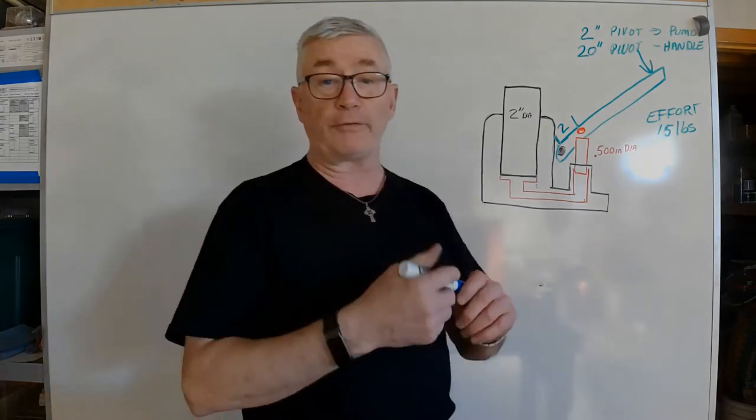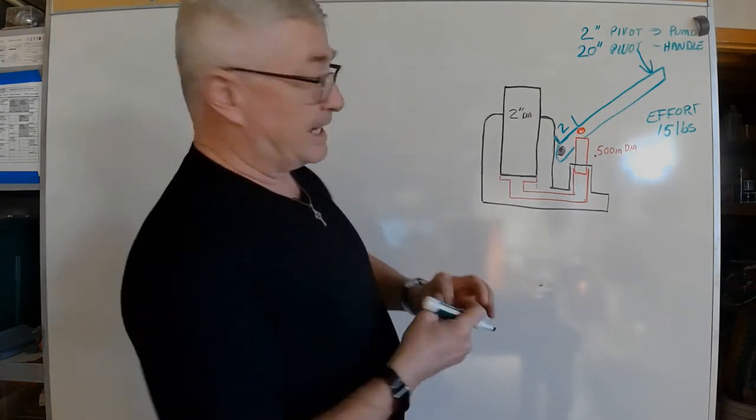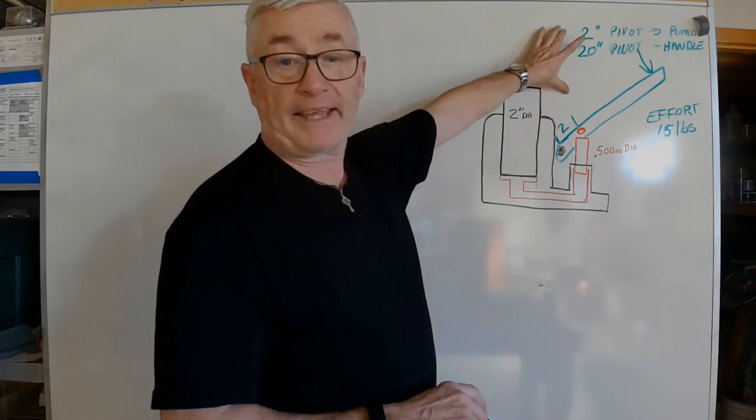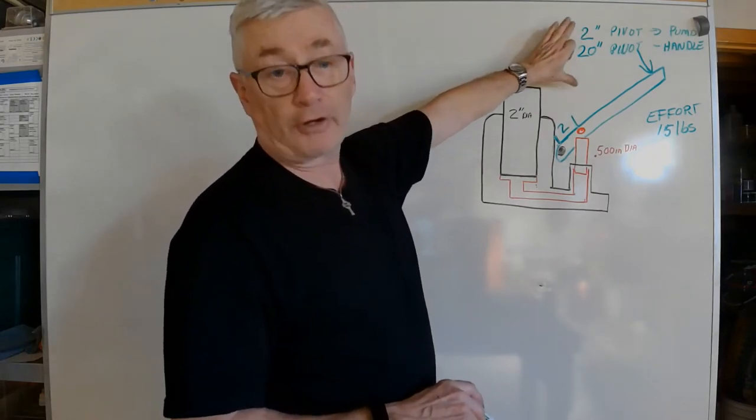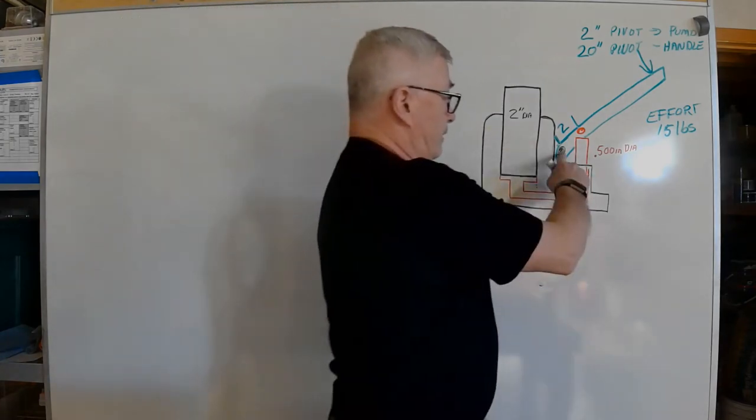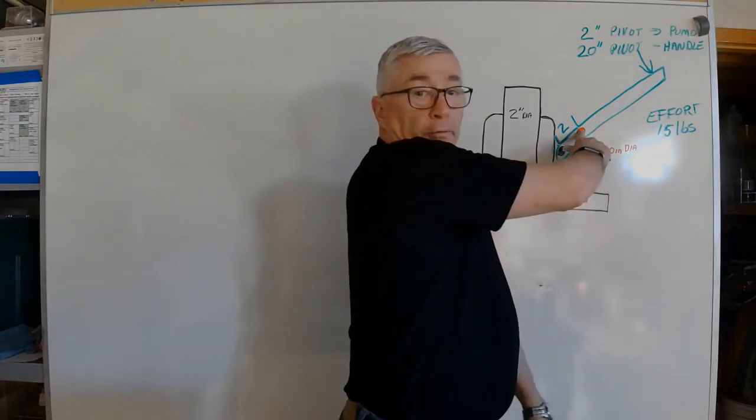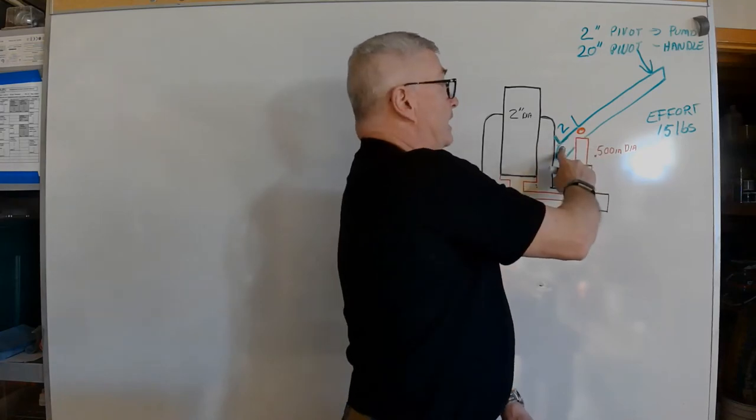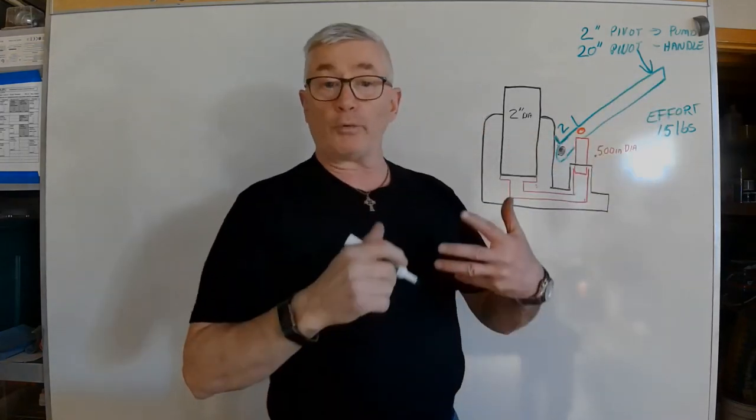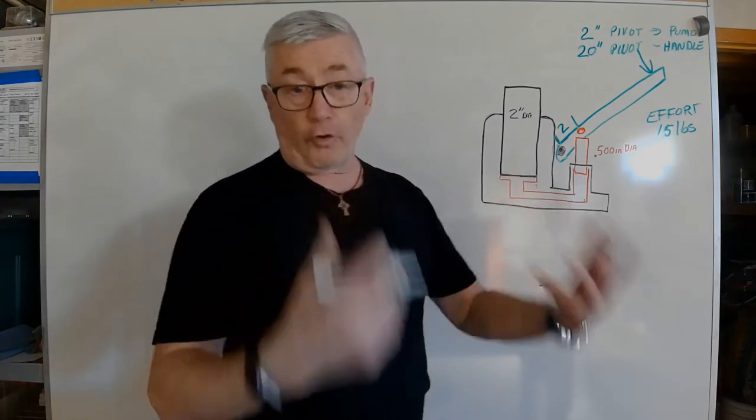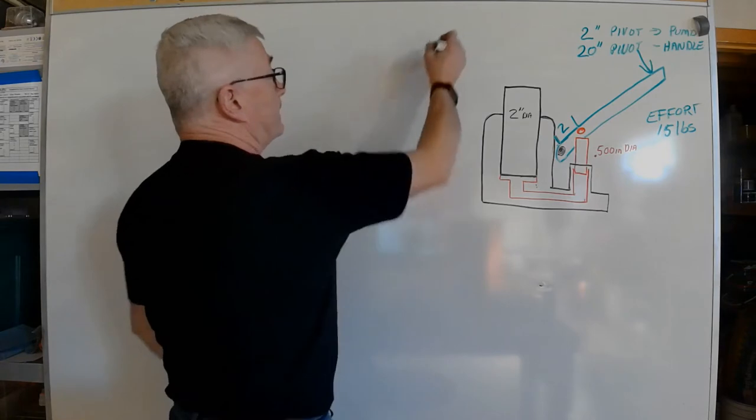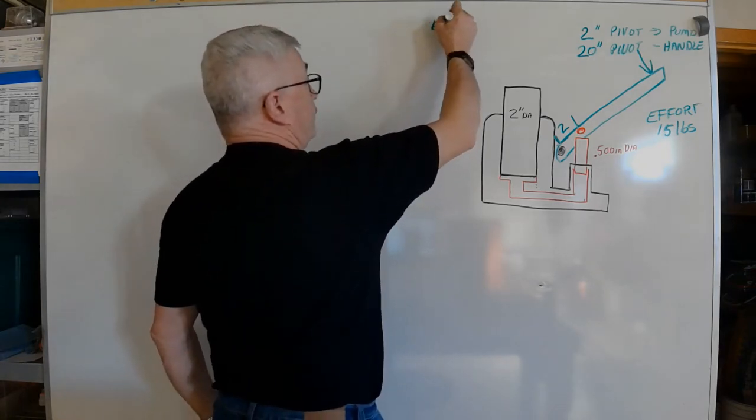The first thing I'm going to do with the green is look at what my mechanical advantage is on my lever and my handle. We have two inches from the pivot to the point where the pump is working, and we have 20 inches from the pivot to the handle. We use the lever formula to figure out what our mechanical advantage is, and remember that is always effort length over load length.